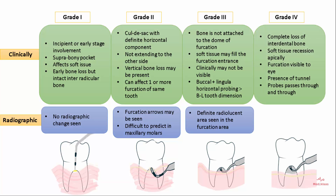Grade 4 is a complex condition where complete bone loss of the interdental tissue is seen. Soft tissue recession is seen apically and the furcation is visible to the eye. There is presence of a tunnel and probes pass through and through.